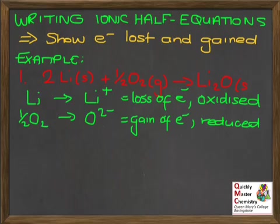We need to write little equations to show this process, showing the gain or loss of electrons. We'll start with the lithium: going from Li to Li⁺. To go from the atom to a 1+ ion, you must lose one electron. The way we show this is to put plus one electron on the right-hand side of the equation.